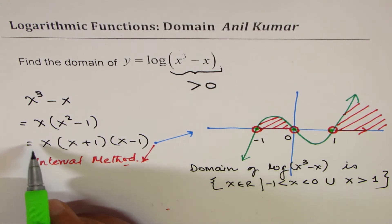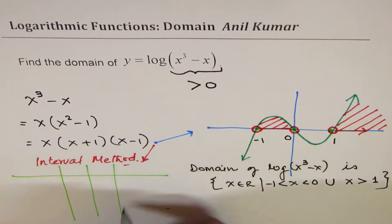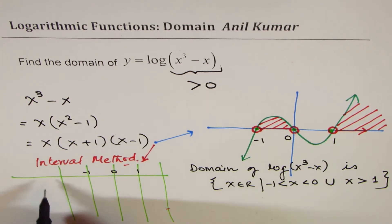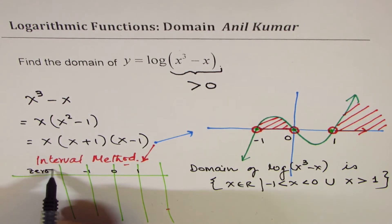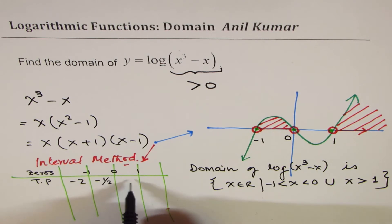For some students who adopt the method of interval, they could actually make different intervals based on the zeros. The zeros here are at -1, 0, and 1. You have to take test points in the intervals: -∞ to -1, test point could be -2. This is -1/2, that is 1/2, and this could be 2.